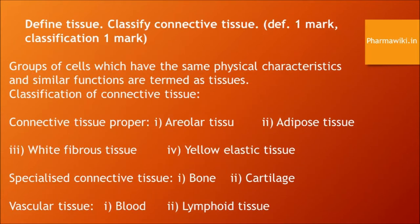Connective tissue proper are of four types: areolar tissue, adipose tissue, white fibrous tissue, and yellow elastic tissue. Specialized connective tissues are of two types: bone and cartilage. Vascular tissue is also of two kinds: blood and lymphoid tissue.